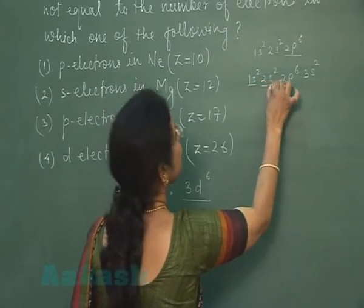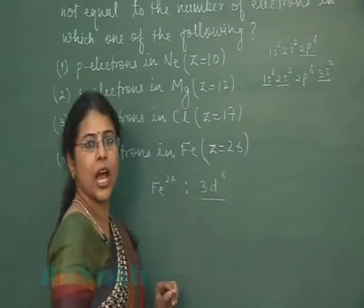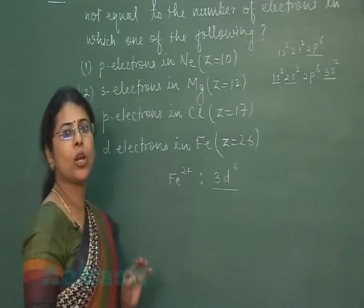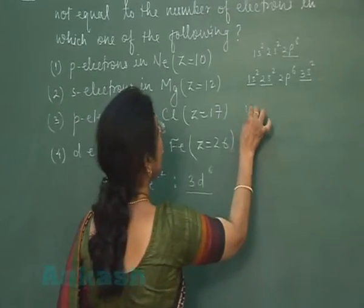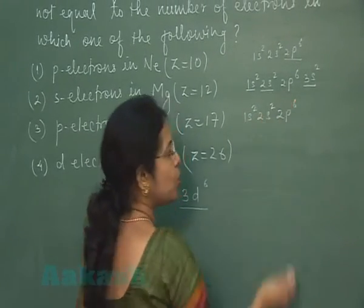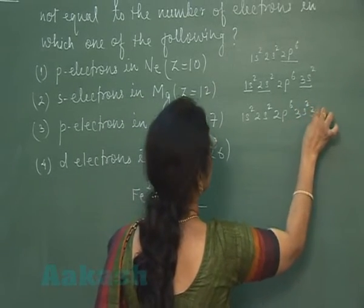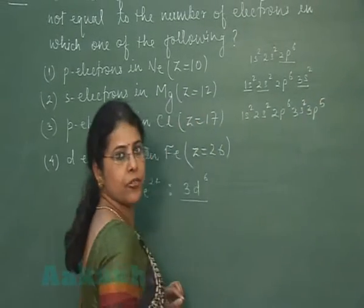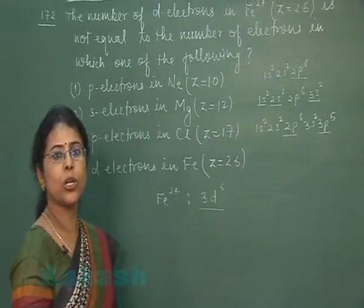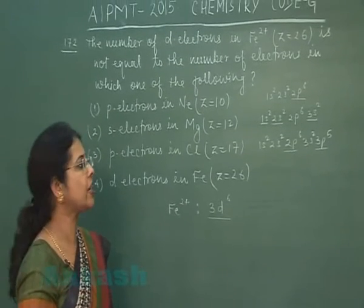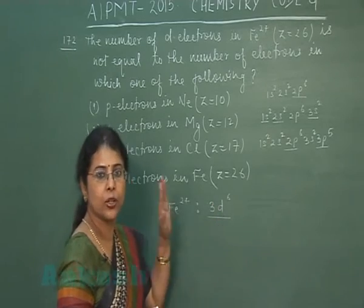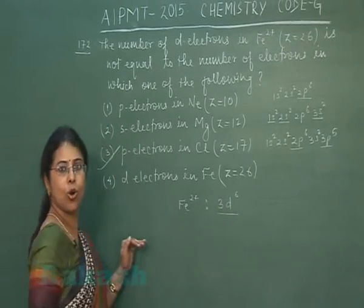Option 3: p-electrons in Chlorine — configuration is 1s², 2s², 2p⁶, 3s², 3p⁵. Total p-electrons: 6 + 5 = 11, which is not equal to 6. So the answer should be the third option.